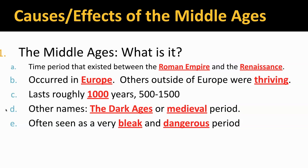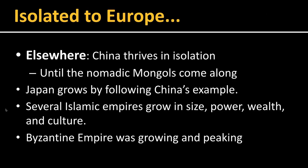Remember, this is isolated to Europe. Elsewhere in the world, China was thriving in its isolation — until the Mongols came. Japan grows by following China's example. Several Islamic groups, like the Ottomans, the Umayyads, the Rashidans, and eventually the Mughals and Safavids, were all thriving during this time period, even though Europe was in pretty rough shape. The Byzantine Empire was also continuing to grow and peaking. Other groups were doing all right — Europe was not.